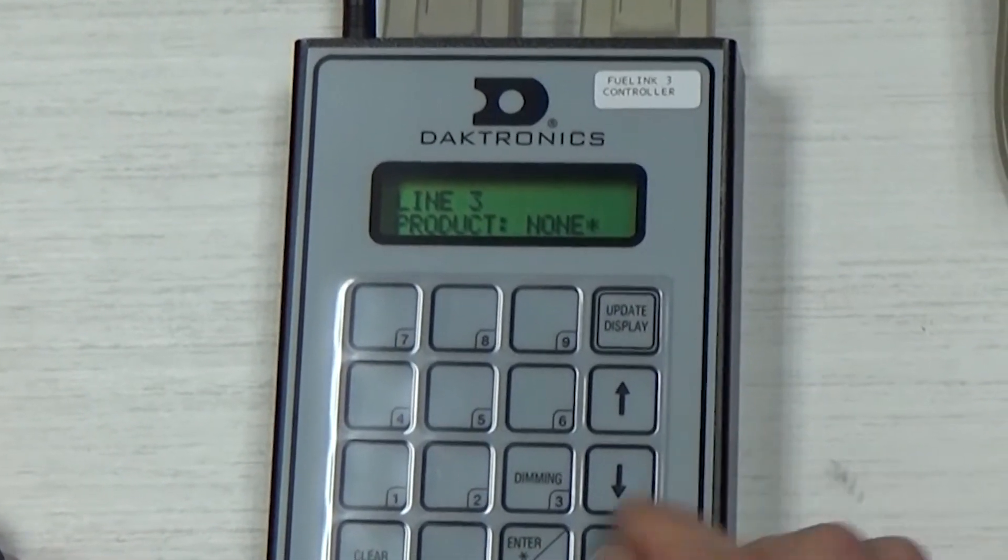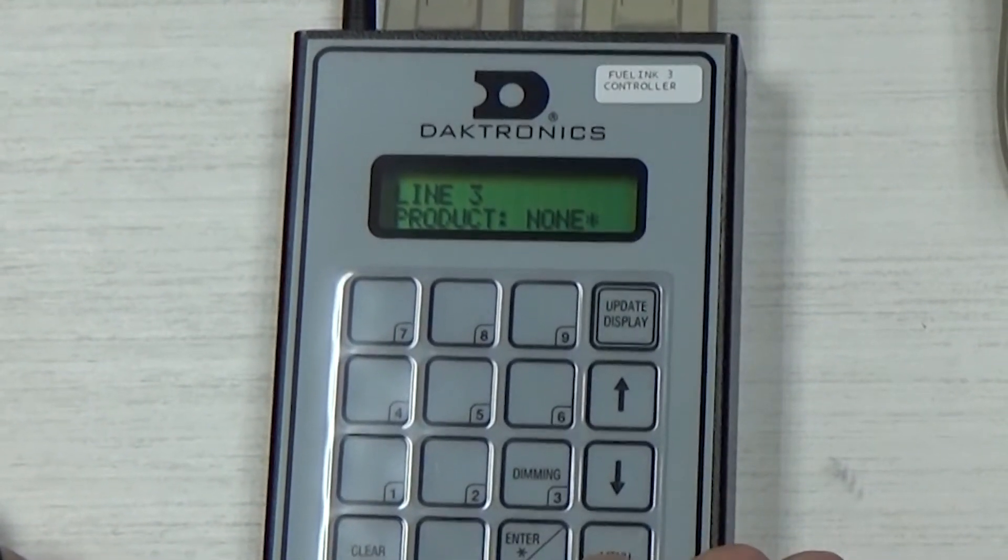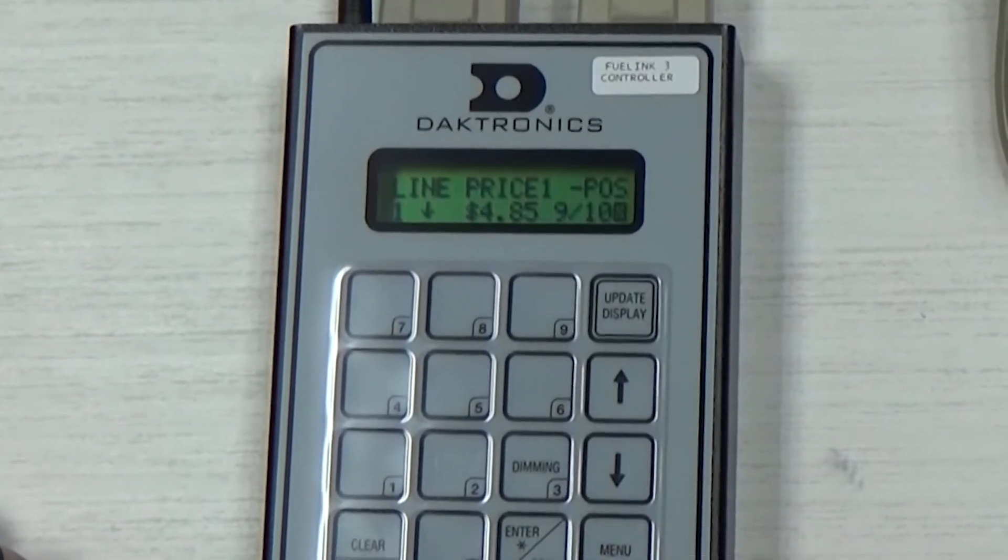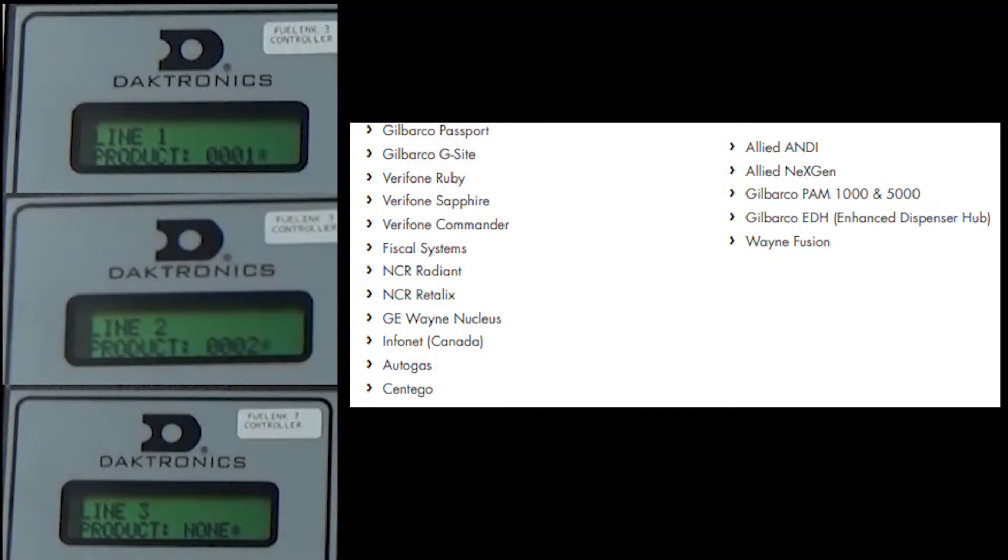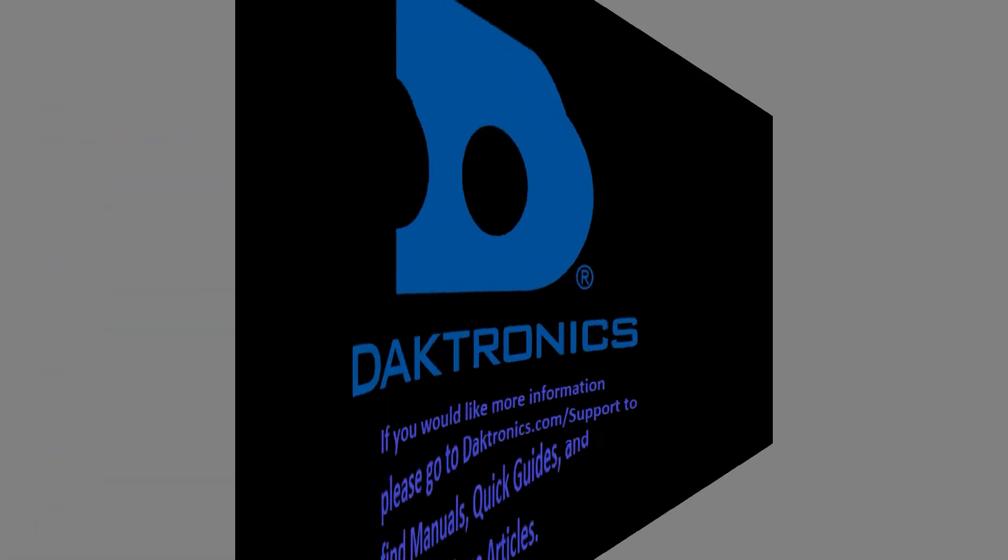If the line is not being used, set it to none. The point of sale system or vendor should be able to provide the details on how to set up each line for that specific site. That concludes the point-of-sale setup training.